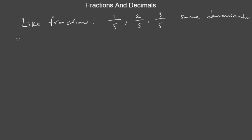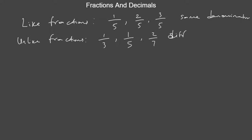As you can guess, we also have unlike fractions. These are fractions with different denominators. So if I have 1 over 3, 1 over 5, and 2 over 7 — in this case they have different denominators, so they are unlike fractions.